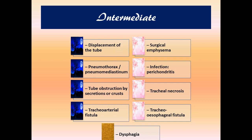Intermediate complications include displacement of the tube, pneumothorax, pneumomediastinum, tube obstruction by crust or secretions due to inadequate suctioning, tracheo-arterial fistula, surgical or subcutaneous emphysema (air trapped in the skin at the incision site), perichondritis (infection of the tracheal cartilage), tracheal necrosis, tracheoesophageal fistula, and dysphagia.